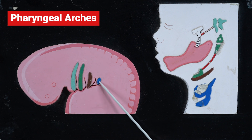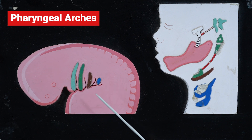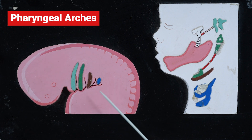The artery of the fourth arch differs on the right and left sides. On the right side, it gives rise to part of the right subclavian. On the left side, it gives rise to the arch of the aorta.